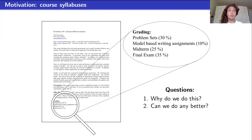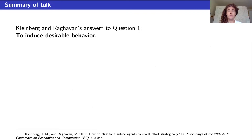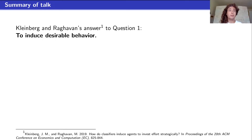In a recent paper from EC'19, Kleinberg and Raghavan introduced a new model to answer these questions. Their answer to why we do this is to induce desirable behavior. The professor has in mind some behaviors they want students to do, and they think that by weighting the grades in just the right way they can induce students to behave in these desirable ways.